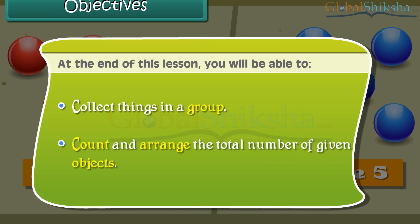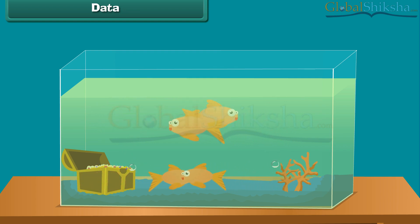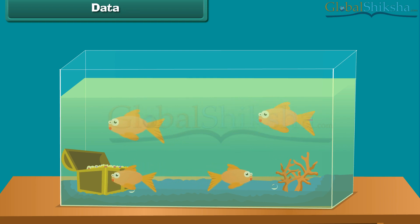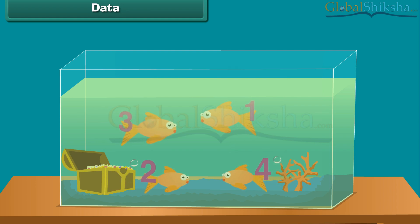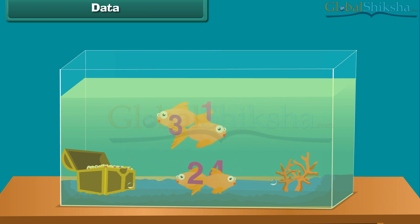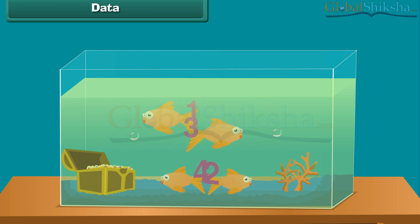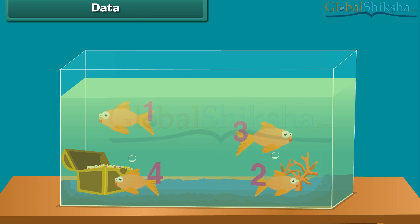Now let us find the data count of orange fishes in a tank. How many are there? One, two, three, four — four fishes. Hence the data for number of orange fishes is four.